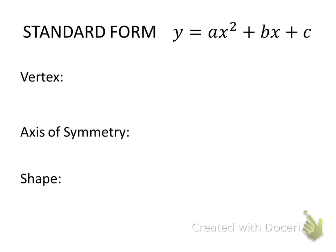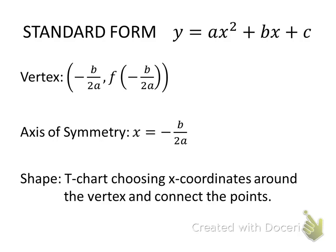Standard form. In order to find the vertex, we have to use the following formula. So in standard form, we have to use this formula: opposite of b over 2a for the x coordinate, and then plug that in, f of negative b over 2a. Axis of symmetry uses that x coordinate, so that's why it says x equals that opposite of b over 2a. And it's a vertical line. Then the shape is determined by a t-chart, choosing x coordinates around the vertex and connect the points.